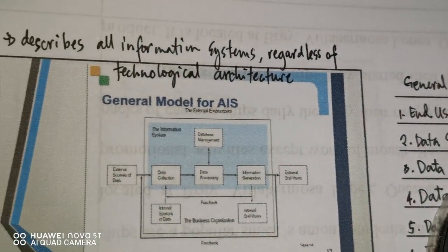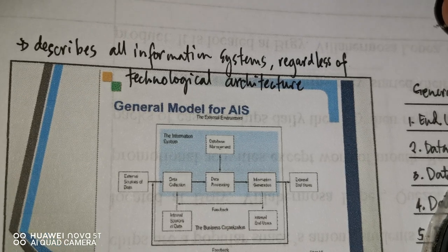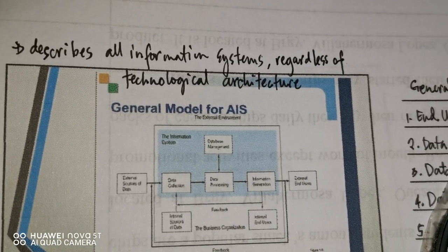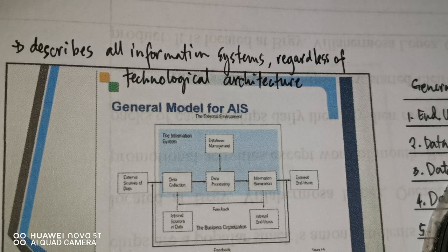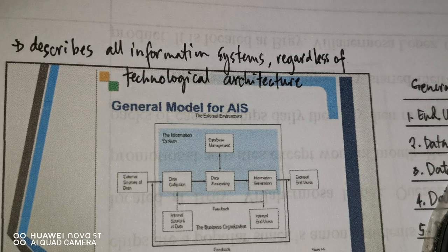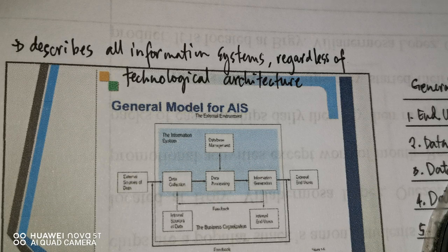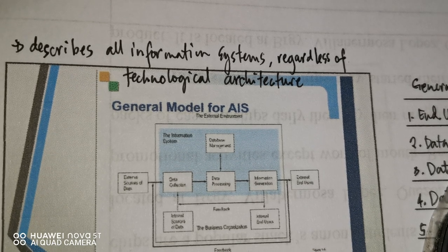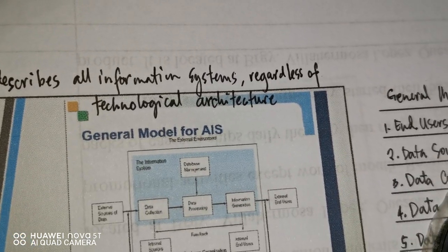The General Model for AIS describes all information systems regardless of technological architecture. No matter how many different platforms, systems, ERP systems, or accounting software emerge, they all follow the same model — especially in accounting, where we follow a standard.